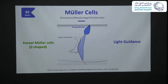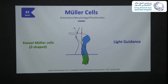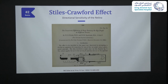What about foveal Müller cells, or the Z-shaped ones? When light is perpendicular to the Müller cell plateau, almost all of it will be transmitted to cone outer segments. But when light hits Müller cells at an angle, some light is partly reflected, which decreases photoreceptor sensitivity. This hypothesis describes a phenomenon known as the Stiles-Crawford effect, published almost 90 years ago by Stiles, a physicist, who noted directional sensitivity of the retina to incident light — and Müller cells may have an effect on this sensitivity.